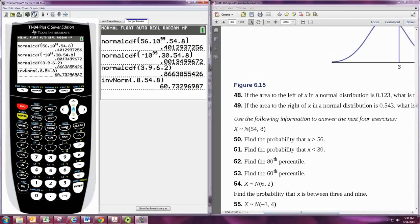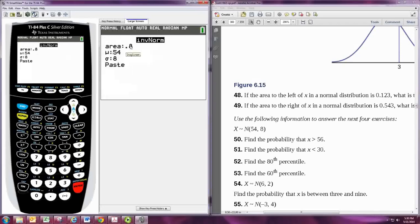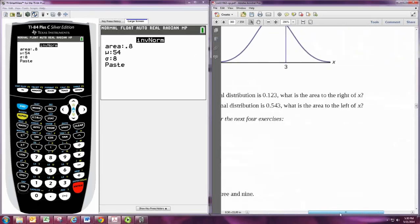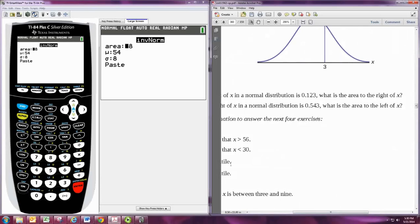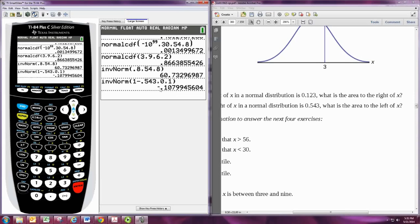Notice that when we do 2nd VARS and go to the inverse norm function, we have to give it an area to the left. So there's no other way of calculating these things other than giving an area to the left. So if you're given an area to the right, such as in a problem like 49, then you need to just find the area to the left. Now, if you remember that the total area is 1, then you'll know that the area to the left is 1 minus the area to the right. So do 1 minus the area to the right, and you can get the area to the left. And there's no mean or standard deviation given, but you would put those in as they're given to you. So that will find the value of the random variable such that the area to the right is 0.543.